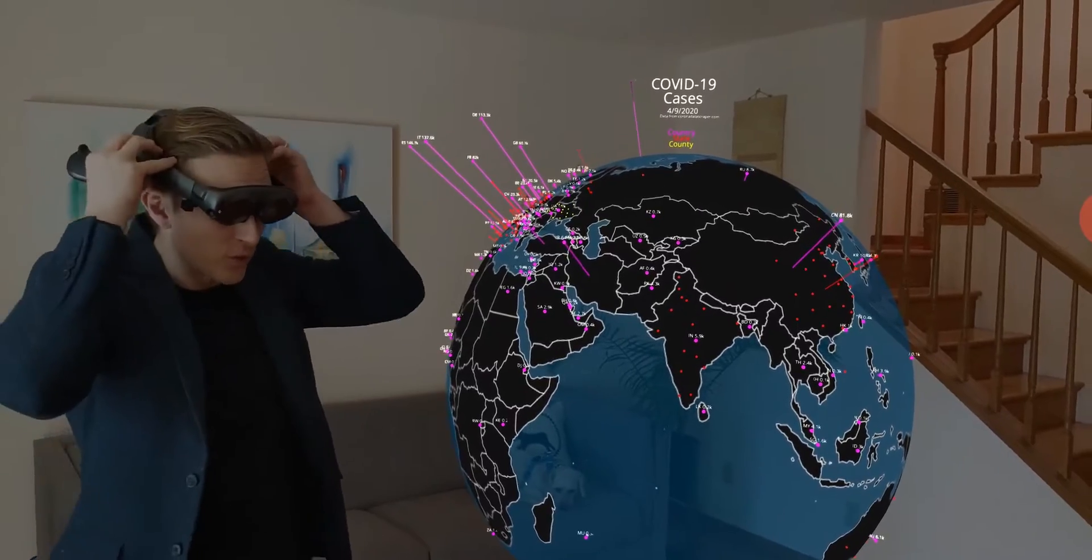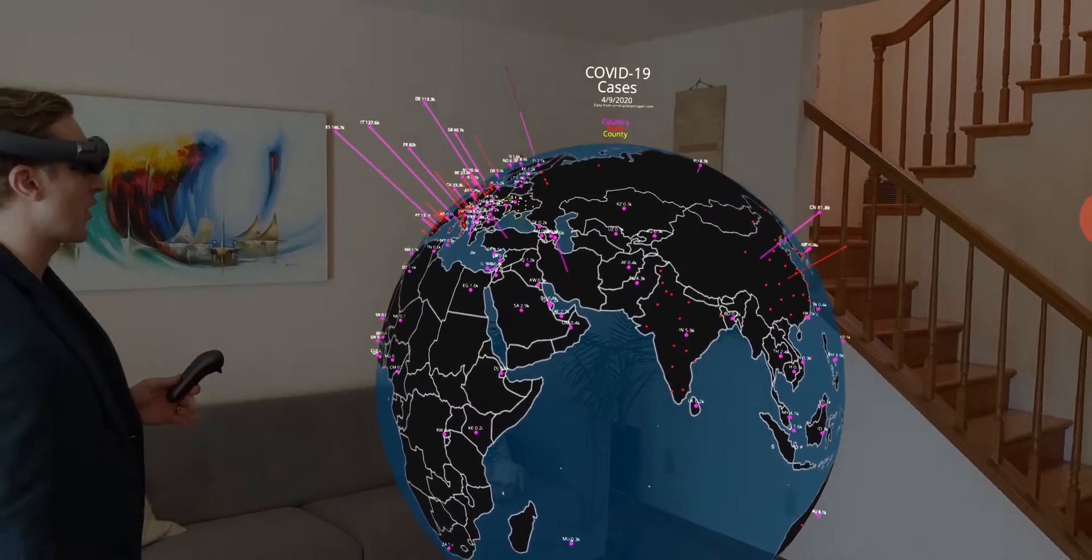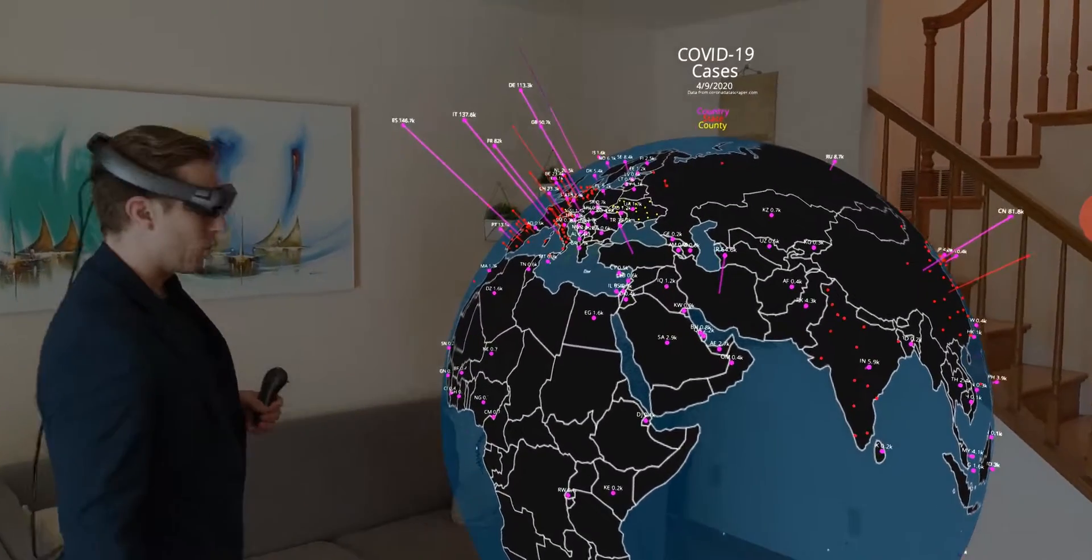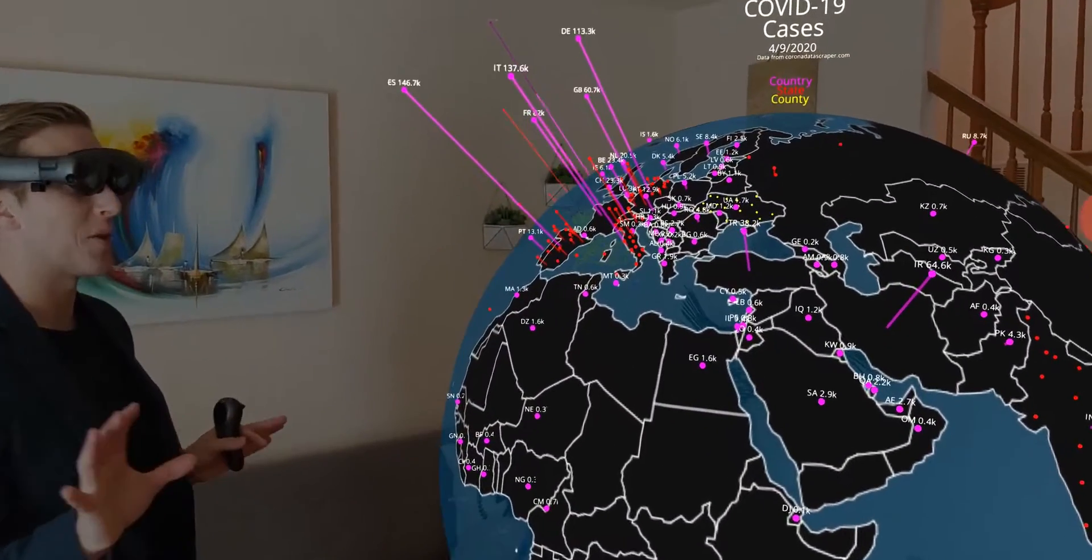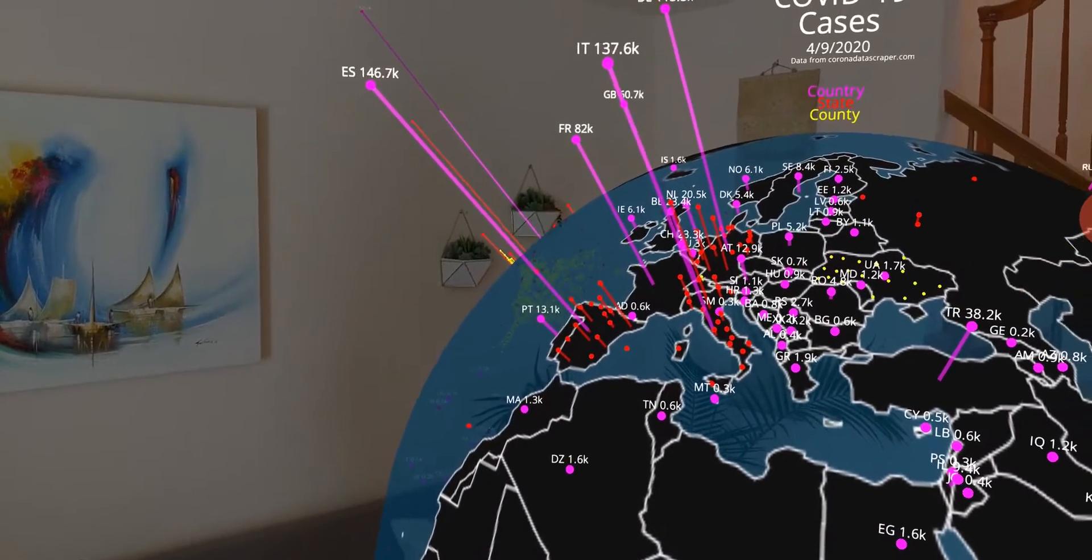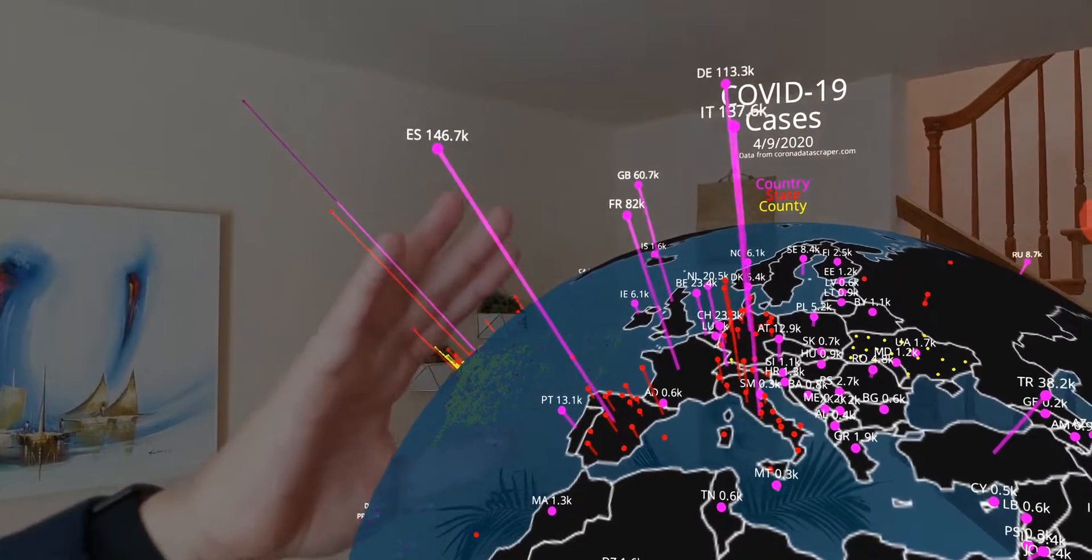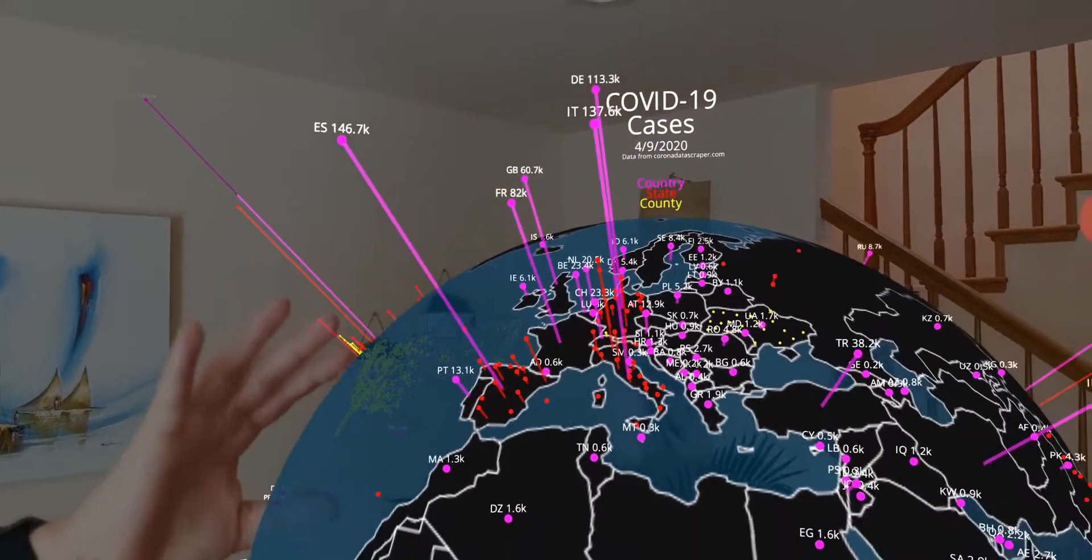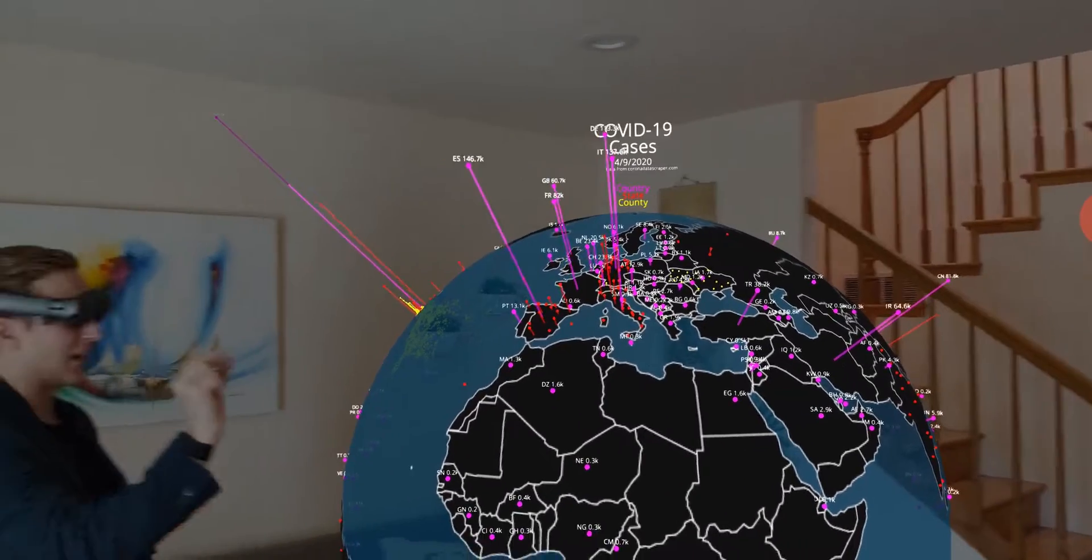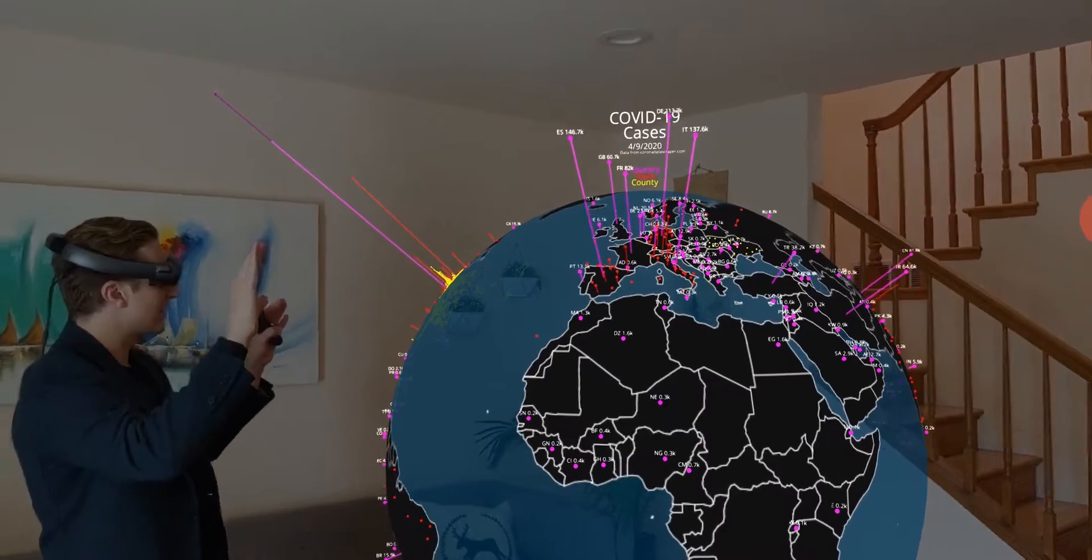This first view that you're looking at is just a view of all of the number of cases throughout the world. And what this shows is the magnitude. The magnitude in the U.S. specifically, where it's this giant line compared to everywhere else. The purple line are all countries, red is all states, and yellow is all counties.